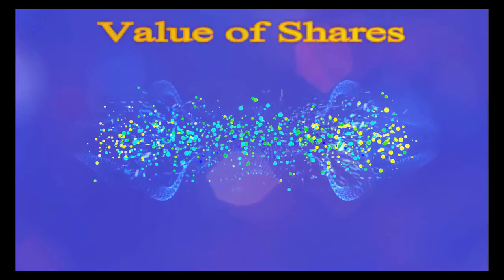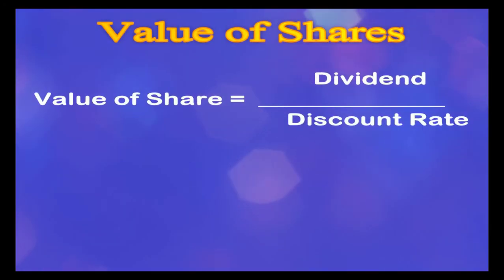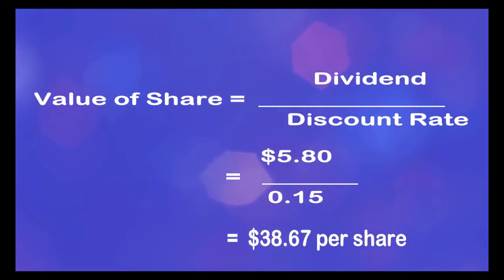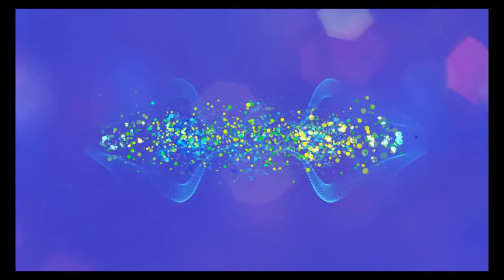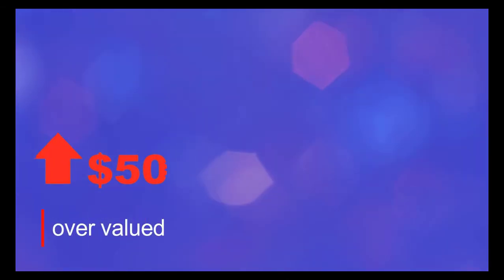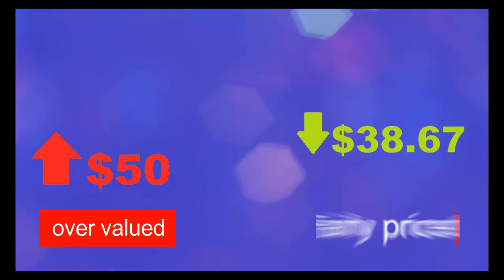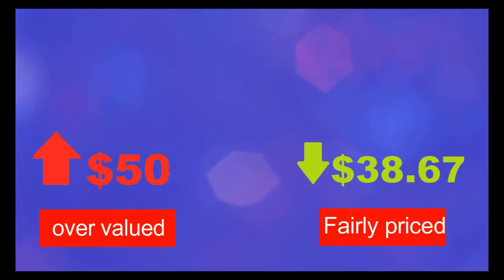The projected dividends are now discounted. As per the dividend valuation method, the value of this share should be close to $38.67 per share. It means that at the current price of $50, the share is overvalued and may fall in the future to get closer to its intrinsic value. If fairly priced at $38.67, the investment is not worthy for him.